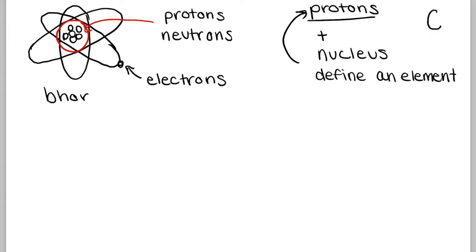Let's say carbon. Carbon has 12 protons and neutrons in its nucleus normally. Six of those are protons. And this number right here, six, defines the element carbon. If it doesn't have six protons, then it's not carbon.